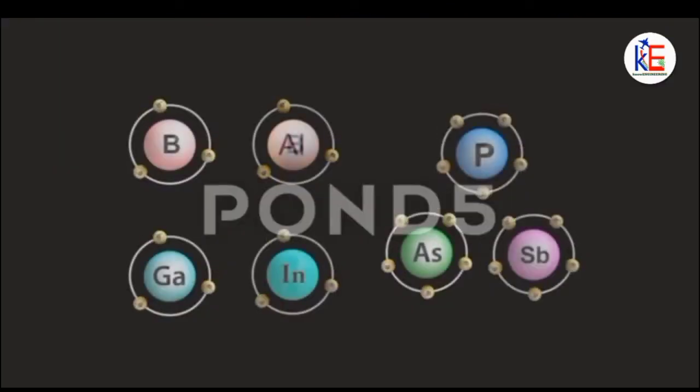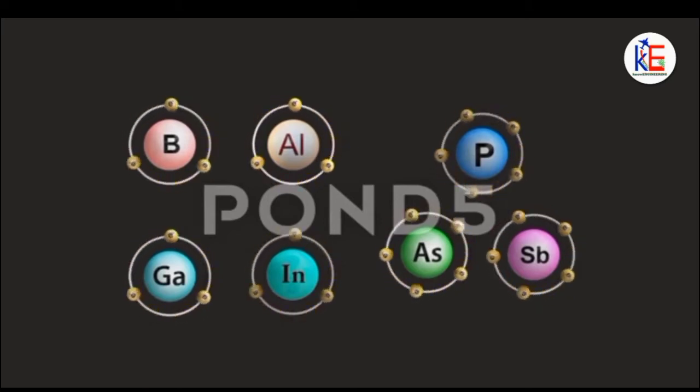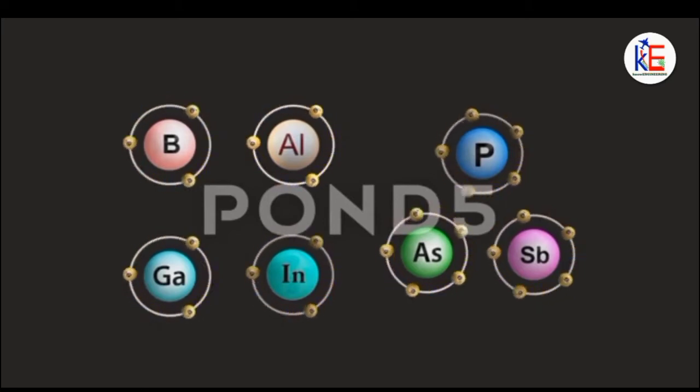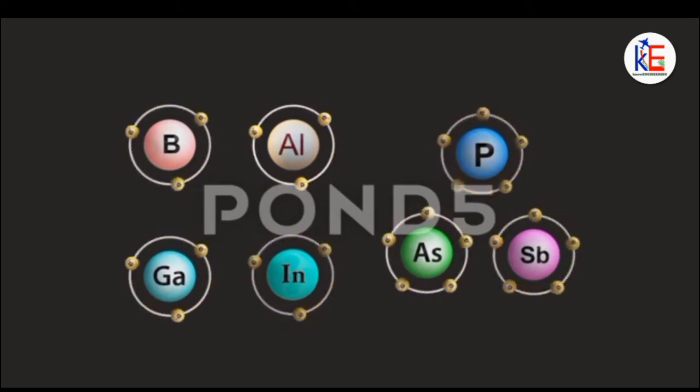You should know that trivalent elements are elements that have three valence electrons. They are also referred to as group three elements. While pentavalent elements are elements that have five valence electrons, they are also referred to as group five elements.